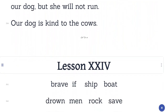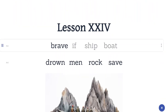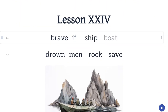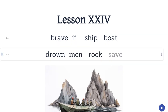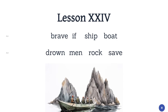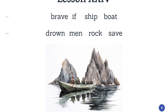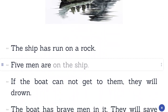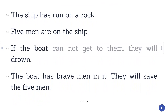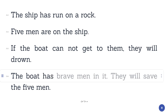Lesson 24. Brave. If. Ship. Boat. Drown. Men. Rock. Save. The ship has run on a rock. Five men are on the ship. If the boat cannot get to them, they will drown. The boat has brave men in it. They will save the five men.